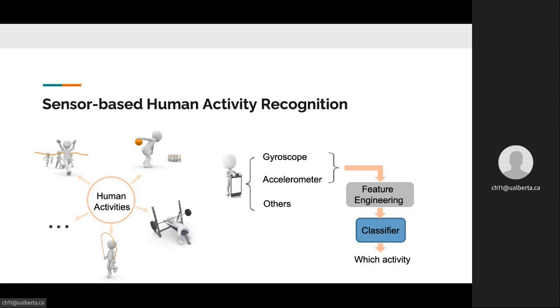The HAR problem is a typical classification problem. Following the common routine of machine learning, the readings from sensors such as gyroscope and accelerometer are processed and fit into a classifier to identify the current activity type the user is performing.